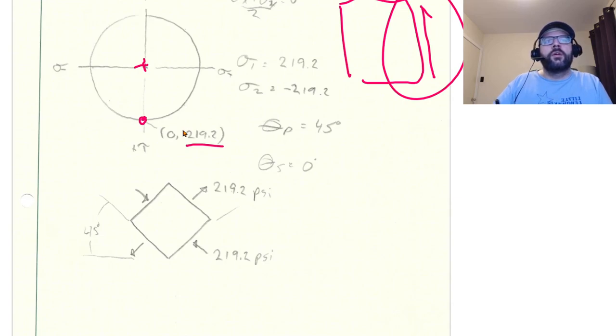So our radius is just equal to the magnitude of that shear stress, which means that our principal stresses can be found here and here at plus or minus 219.2 psi.